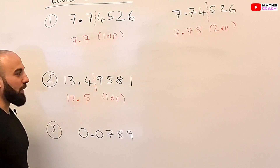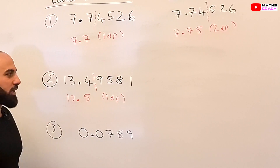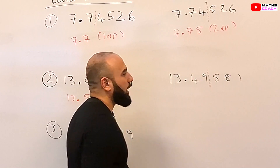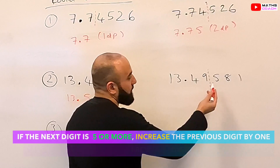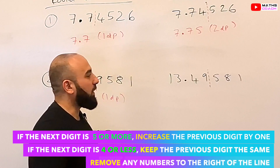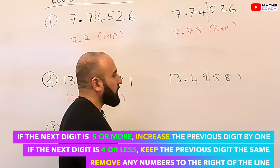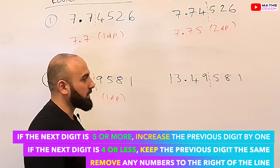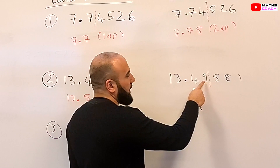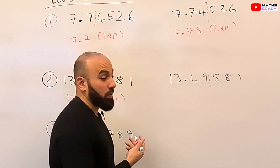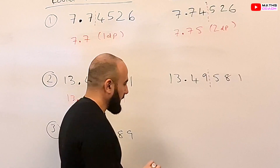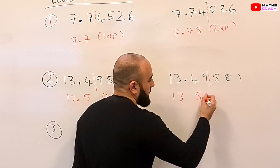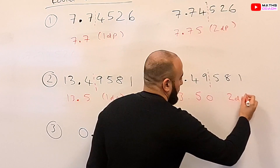Now we're going to write the same number to two decimal places. We draw a line after the second digit and look at the number next to it. This number is 5 and above, so we increase the number. But 9 won't increase to a 10 — we can't do that here. So we have to increase the 49 to a 50. So we would write down 13.50 to two decimal places.